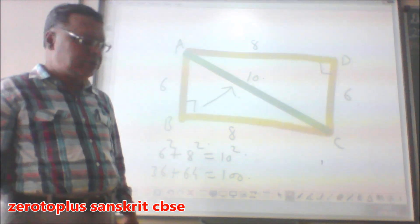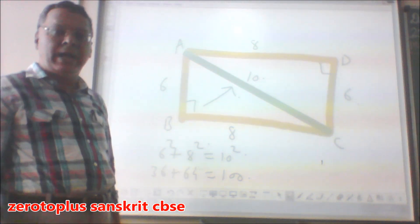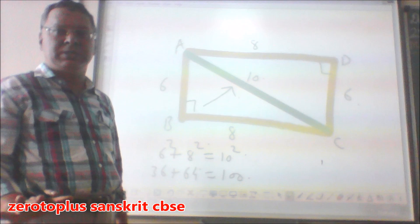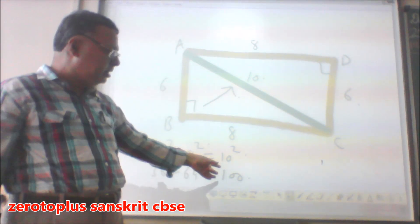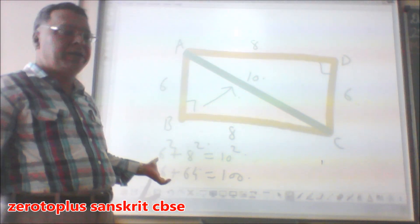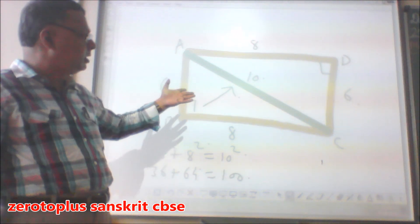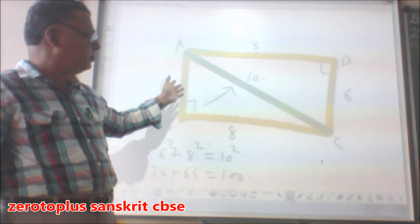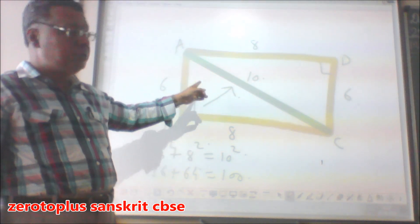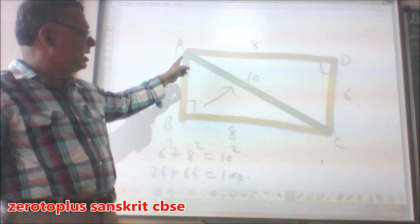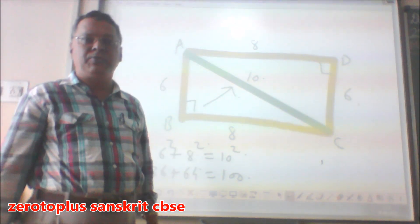Taking the squares: 36 plus 64, adding the squares gives 100 on the left hand side and 100 on the right hand side — 100 equals 100. This is Pythagoras theorem verified. We can find the distance between points A and C. Thank you so much.